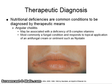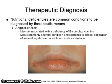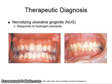Therapeutic diagnoses are achieved by either supplying nutritional supplements or by using medication to see if the condition clears up. The condition on the lip commissure seen below is known as angular cheilitis, which may be associated with deficiency of B-complex vitamins or a fungal infection. Necrotizing ulcerative gingivitis, also known as NUG, can respond to hydrogen peroxide.